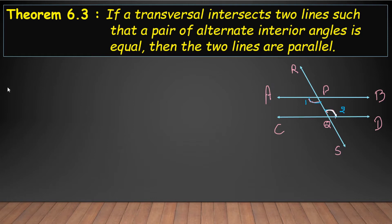So first we will write: Given - angle 1 equals angle 2. To Prove - AB parallel to CD.